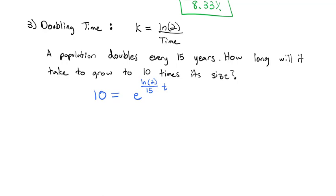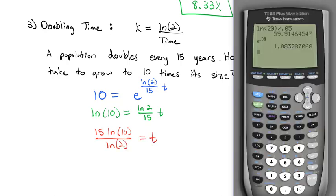Since 1 times e is just e, we can jump to taking the natural log of both sides. We'll end up with the natural log of 10 equals the natural log of 2 divided by 15 times t. To solve for t, we'll multiply by 15 and divide by the natural log of 2.